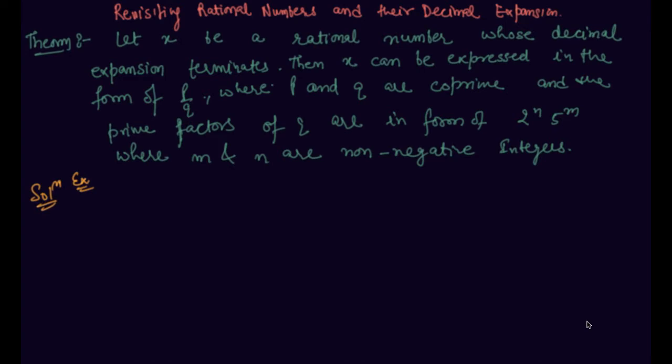So there is one theorem based on this which states that let x be a rational number whose decimal expansion terminates. What is the meaning of decimal expansion terminates?